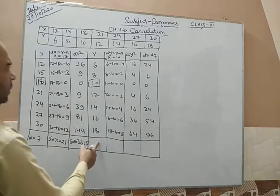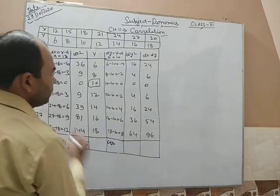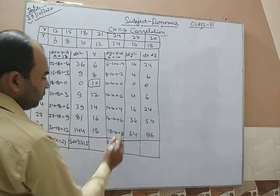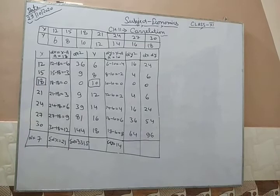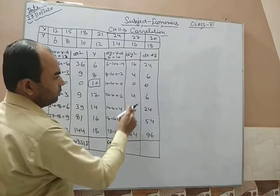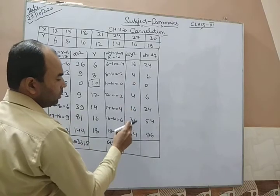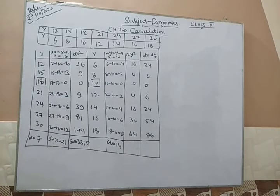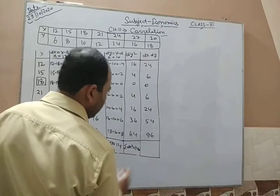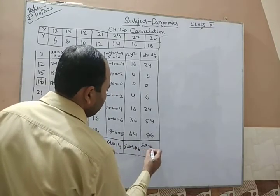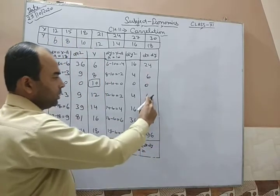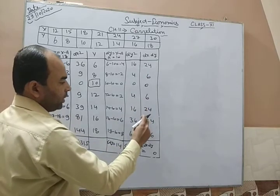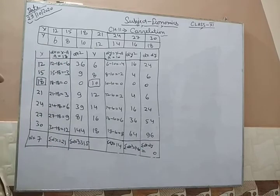Summation of dy: the negative values are −4 and −2, giving −6, and the positive values are 2+4+6+8 = 20, but wait — summing all: −4−2+0+2+4+6+8 = +14. So summation dy = 14. Summation dy squared: 16+4+0+4+16+36+64 = 140. Summation dx·dy: 24+6+0+6+24+54+96 = 210.